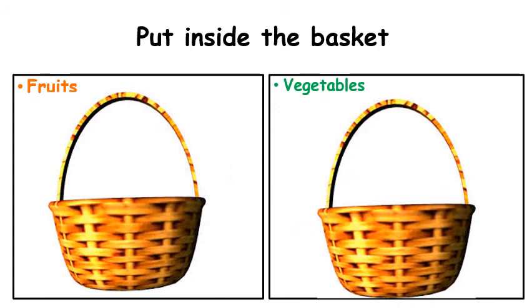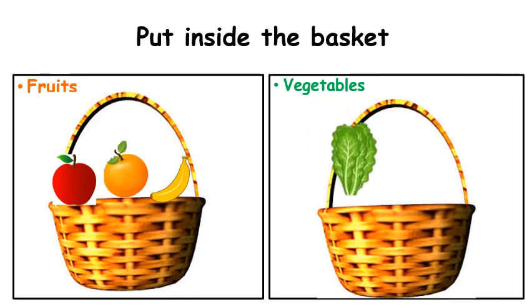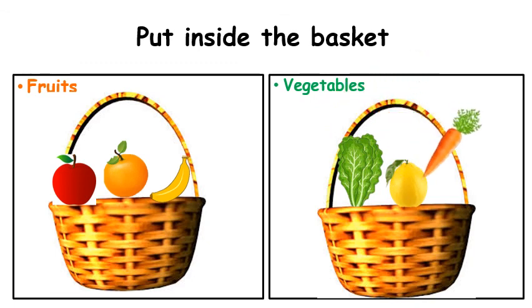After we name some vegetables and the fruits, now it's your turn to classify them into two groups. Bring two bowls or two baskets. In the first basket put inside of it some fruits you can find them inside your house. In the second basket we are going to classify the vegetables. You put some vegetables you can find them inside your house.